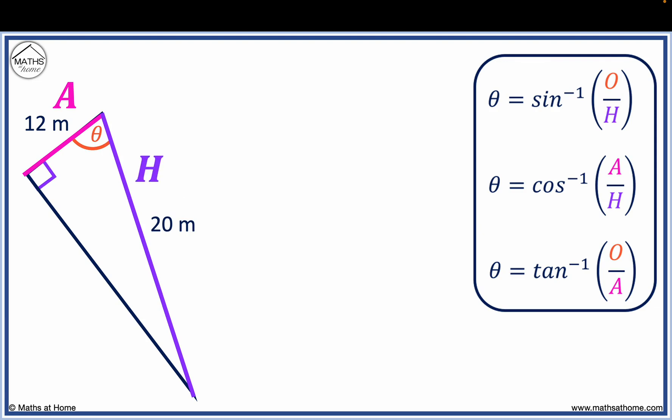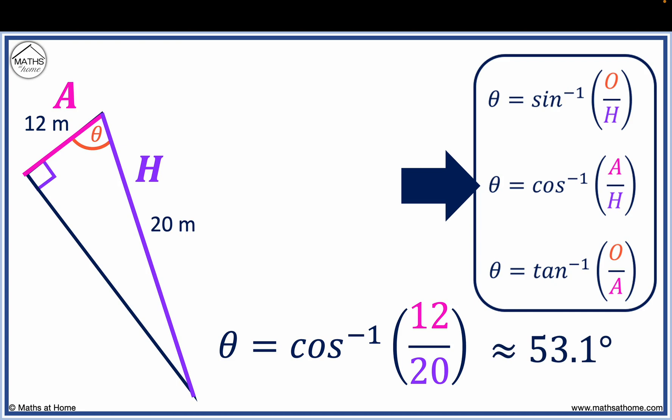The equation with an A and an H in it is the cos equation. We substitute A equals 12 and H equals 20, and on a calculator, this equals 53.1 degrees.